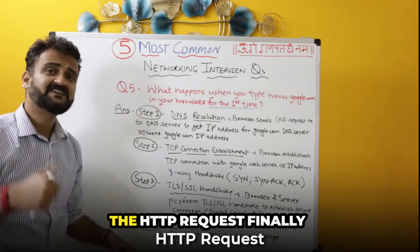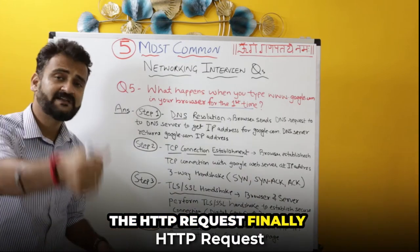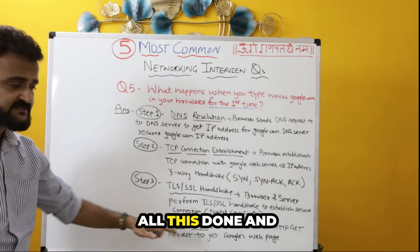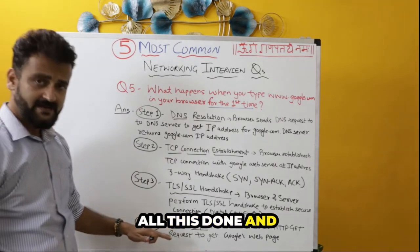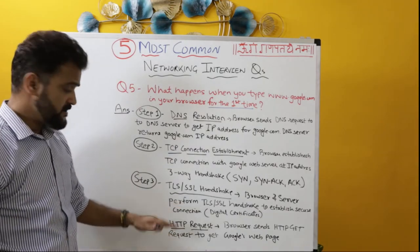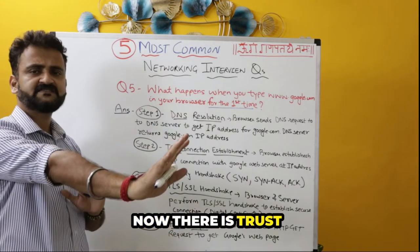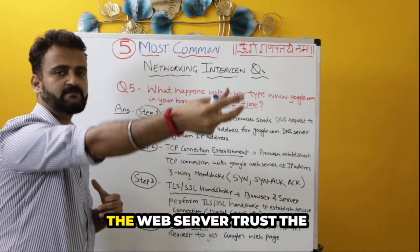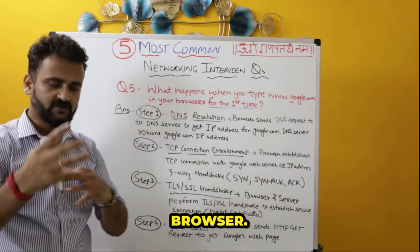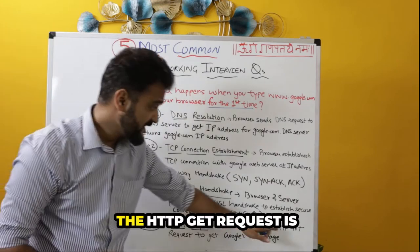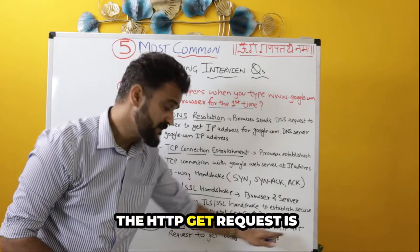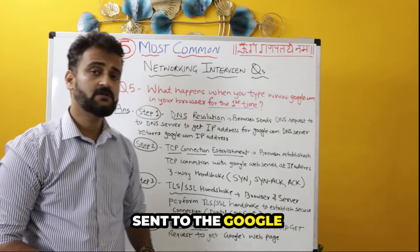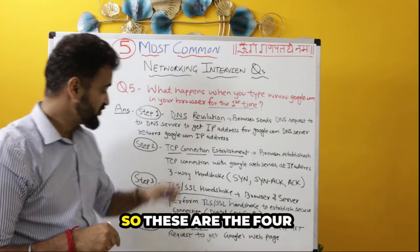At step four, the HTTP request finally gets triggered. With the TLS/SSL handshake done and trust established — the browser trusts the web server and the web server trusts the browser — there is mutual trust. The browser now sends an HTTP GET request to Google requesting Google's web page.